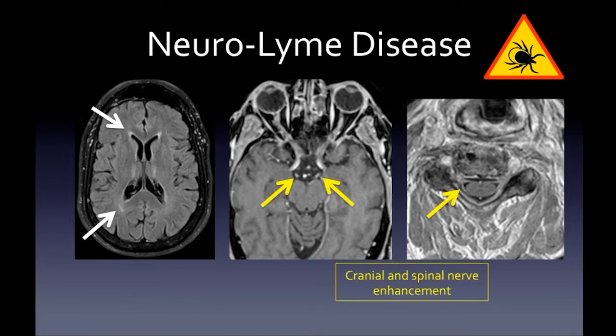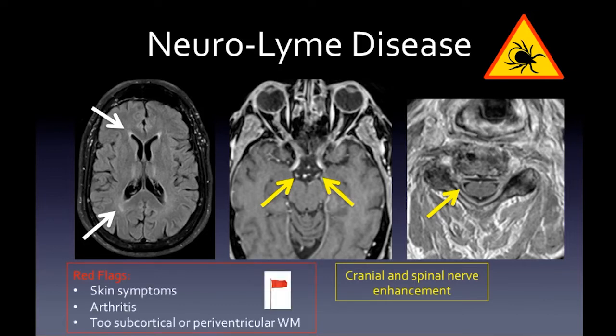Lyme disease is rare to see with MRI findings. It's a spirochete disease from Borrelia and can produce periventricular and deep white matter lesions. Key clues: cranial and spinal nerve enhancement. Red flags: classic skin rash and arthritis. The FLAIR lesions are usually very subcortical or periventricular without infratentorial or cortical/juxtacortical lesions typical of MS. Cranial nerve — such as ocular motor nerve — and spinal nerve enhancement should point you away from MS.